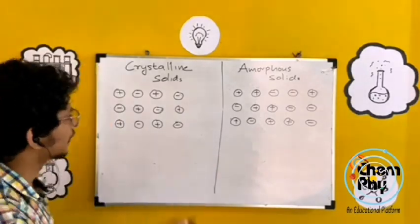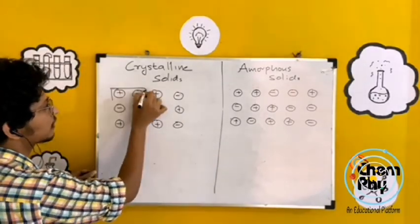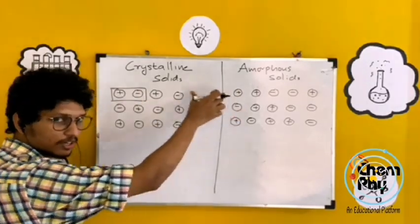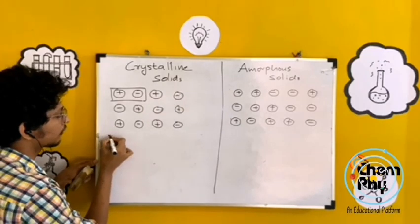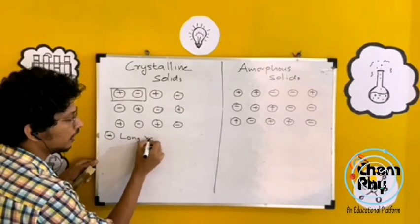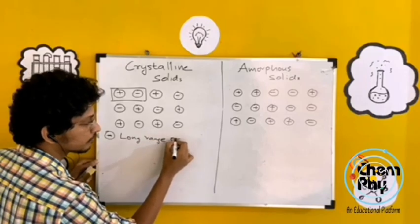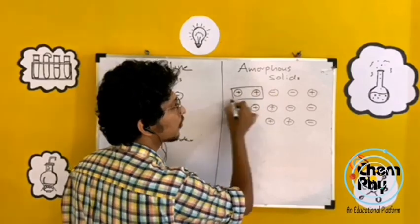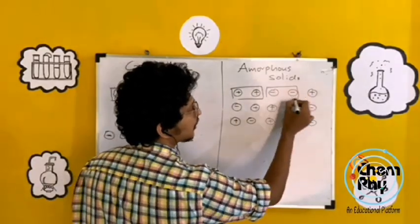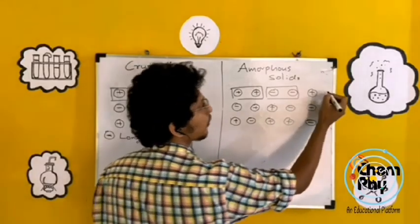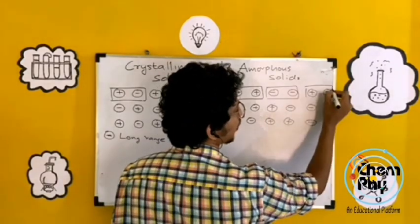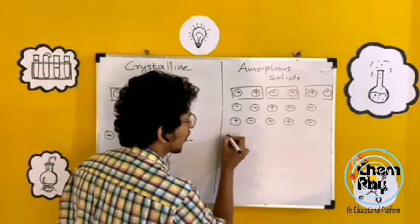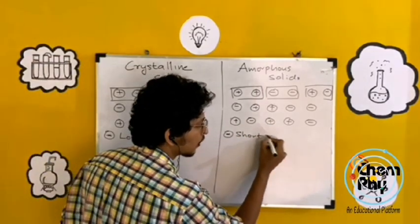In the case of crystalline solids, the range order is long — they have long-range order. In the case of amorphous solids, they have only short-range order.